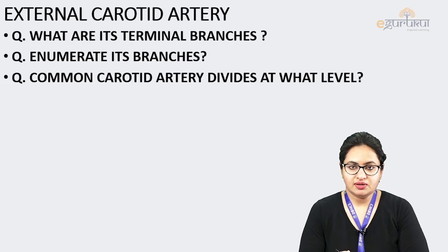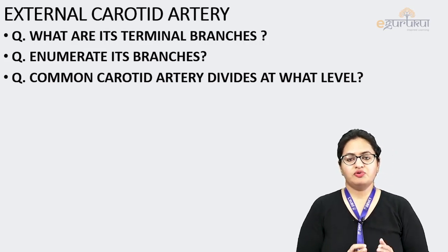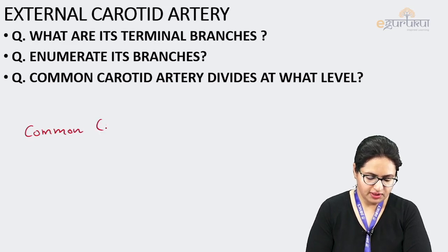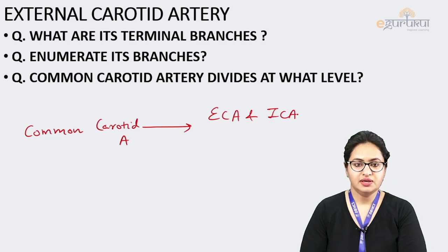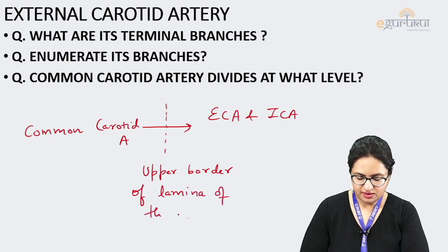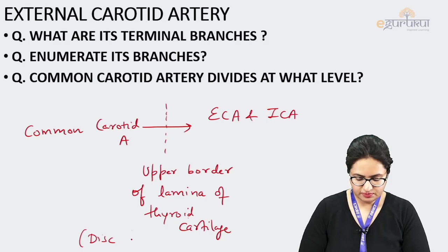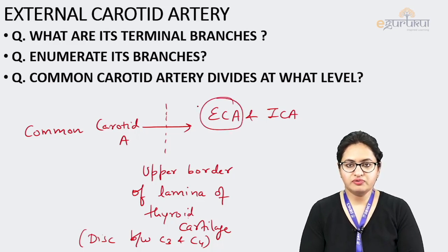Regarding the external carotid artery, the common carotid artery terminates into the external and internal carotid artery. It divides into these two at the level of the upper border of the lamina of the thyroid cartilage, which lies at the level of the disc between C3 and C4 vertebra. This is the level at which the external carotid artery originates.